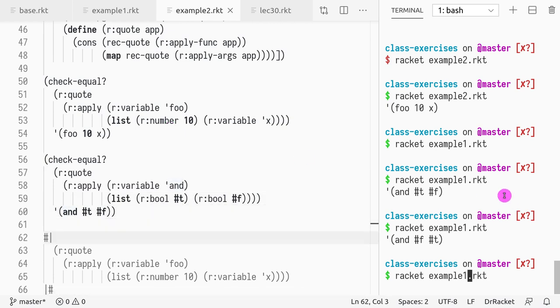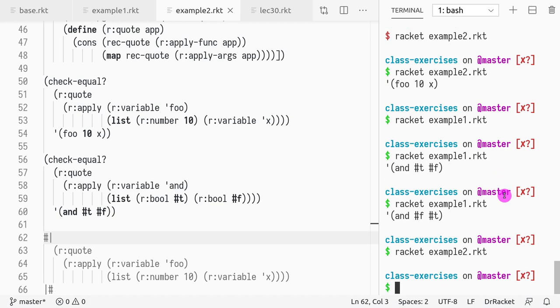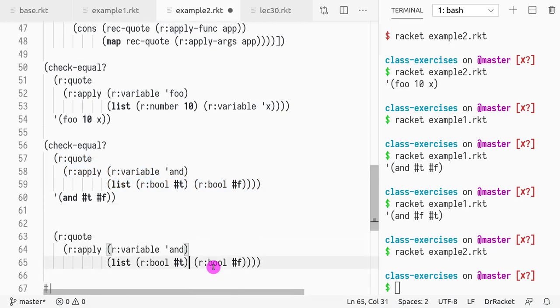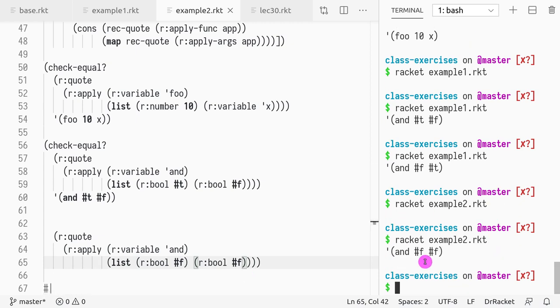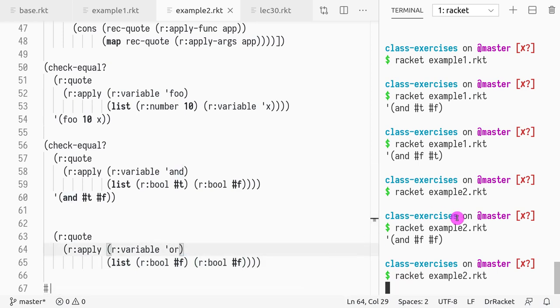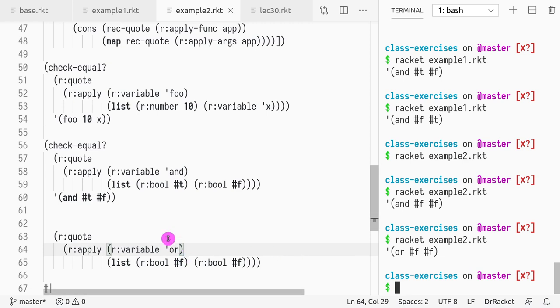Let's see if example two works. It seems to be working. If I copy paste this and change this to false and leave it at false, you'll see I have false, false, false, false. Everything works. If I change this to 'or', I see 'or false false'. Of course we're not evaluating, we're just printing it.